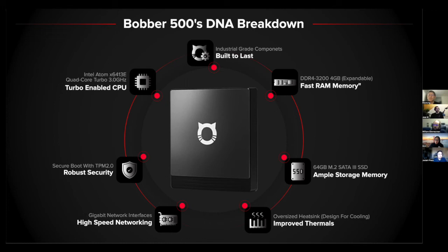The Bobber 500 also has a Trusted Platform Module (TPM) — a hardware component that stores cryptographic keys and enables disk encryption. This is better than software-based encryption because the encryption key isn't stored on the drive itself. If someone takes out the storage and puts it in a different computer to access it, it would be encrypted since it needs the TPM chip to decrypt the information.